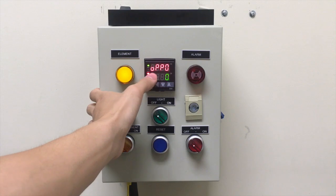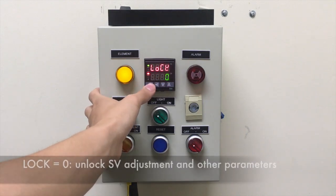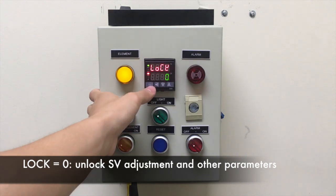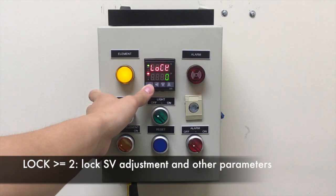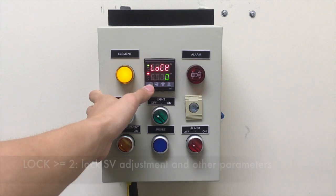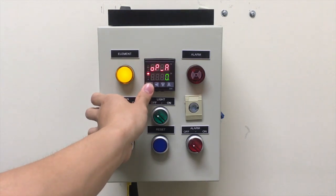OPPO stands for output power and for this controller it should always be set to zero. LOCK allows you to lock your parameter settings so that the operator doesn't accidentally change any settings. SN is sensor. Using this parameter the operator can tell the controller what kind of temperature probe is being used.